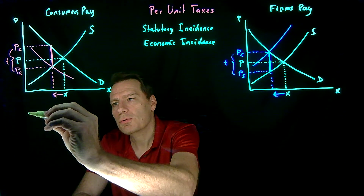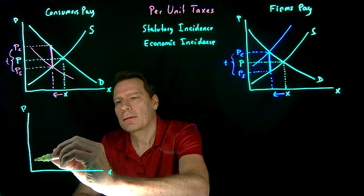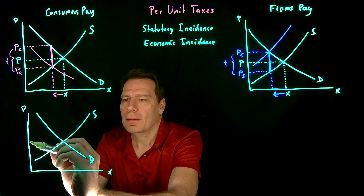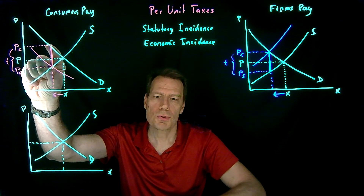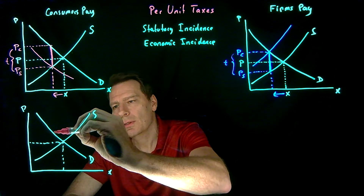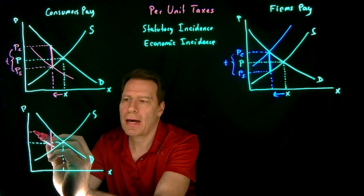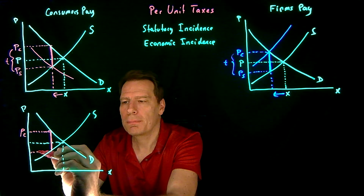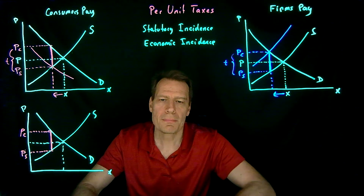So now we could redraw these graphs without shifting curves and just show the final result. We start with our supply and demand curves and introduce a difference between consumer and producer prices equal to the size of the per-unit tax — what's called a tax wedge. The higher part off the demand curve is the price that consumers pay, the lower price is the price that sellers receive, and the difference is the per-unit tax.